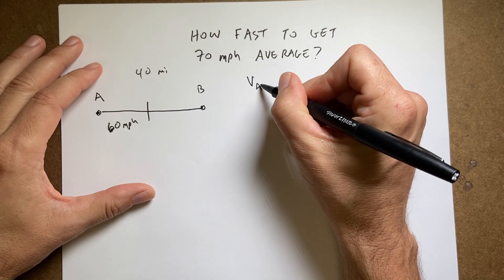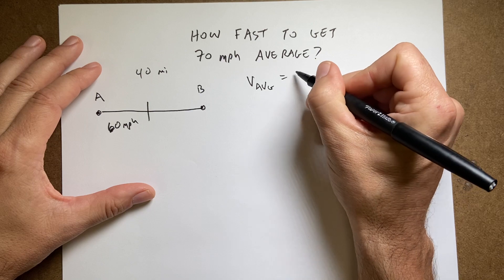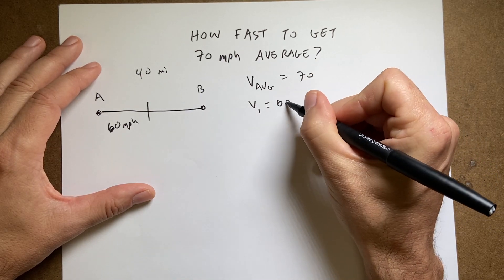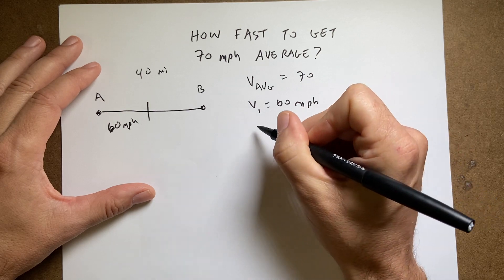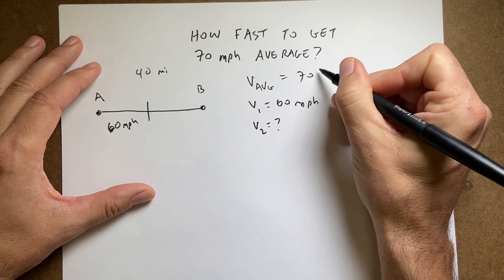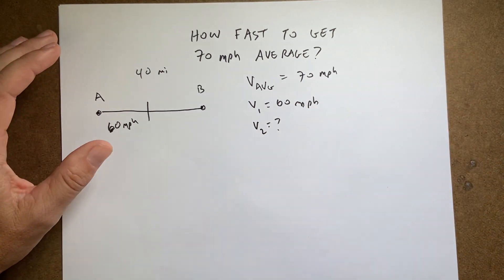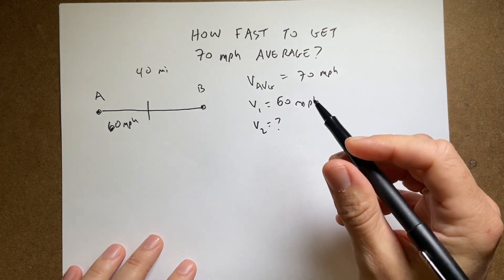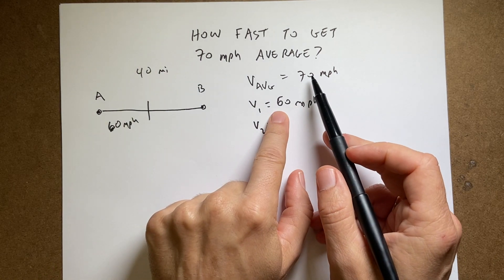So V average total equals 70, V1 equals 60, V2 equals I don't know. Okay, so let's think about this. If you say oh well that's easy, if you want to get an average of 70 it would just be 80. 80 plus 60 divided by 2 would give you 70.